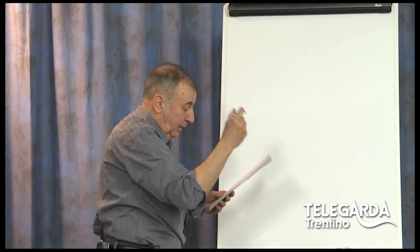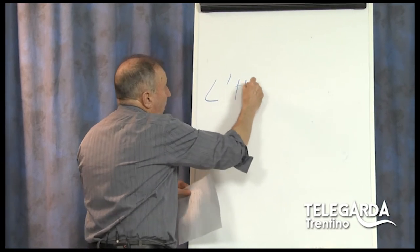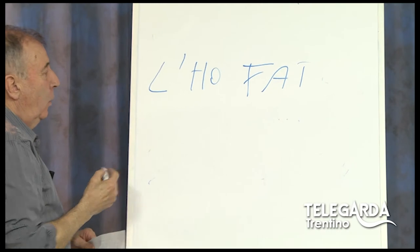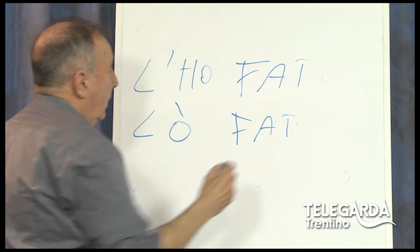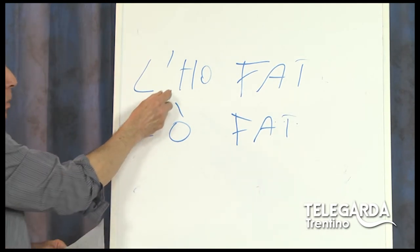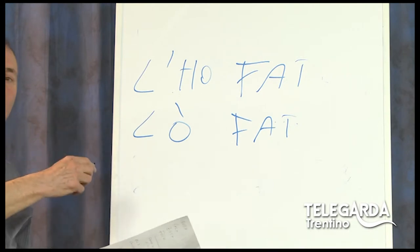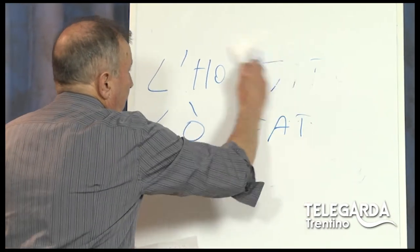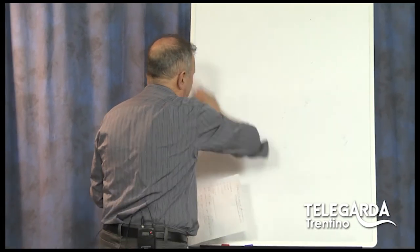Anche questa è una cosa particolare sulle forme del verbo avere e del verbo essere. Poi c'è anche un'altra: L'HO FAT. Eccolo qua: L'HO FAT. Oppure così: L'HO FAT. Qual è la forma esatta? Anche qui bisogna decidere: o così o così. Non si può ondeggiare tra una forma e l'altra.